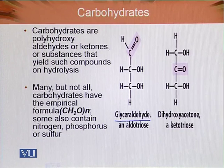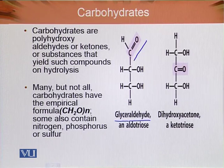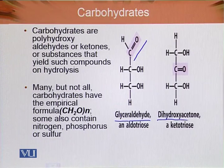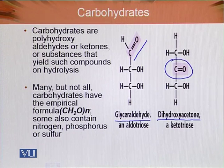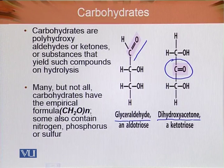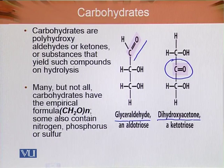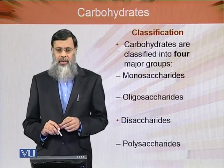Glyceraldehyde has a straight-chain structure having three carbon groups, and a carbonyl group is attached at one end of the carbohydrate molecule. Its isomer is dihydroxy acetone. The difference between them is only the functional group — attached with the double bond at the middle or second carbon atom. Many, but not all, carbohydrates have the empirical formula CH₂O×n, but there are exceptions; some carbohydrates also contain nitrogen, phosphorus, and other groups.